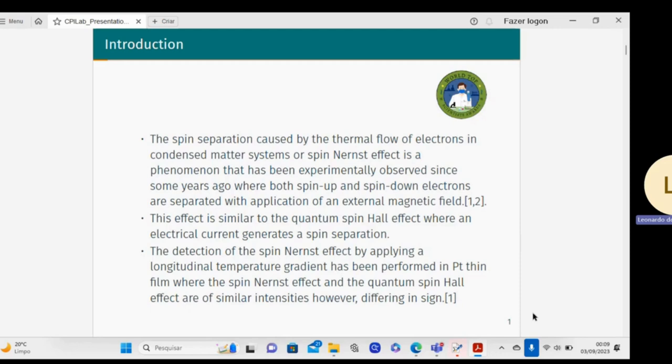This effect is similar to the quantum spin Hall effect where the electrical current generates a spin separation. The detection of the spin Nernst effect by applying longitudinal temperature gradient has been performed in platinum film, where the spin Nernst effect and the quantum spin Hall effect are of similar intensities, however differing in sign.